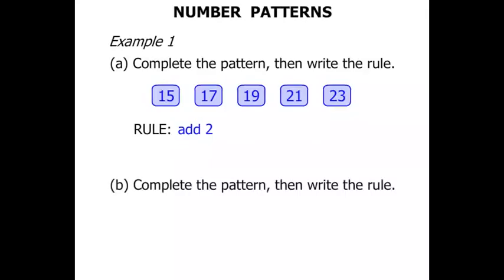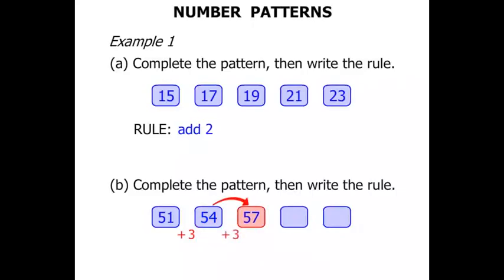The next one again, complete the pattern then write the rule. This time we've got some different numbers. The same method though. So we start at 51. How do we get to 54? Well to do that we've added 3. To get from 54 to 57 again let's add 3.